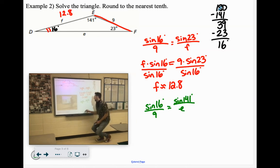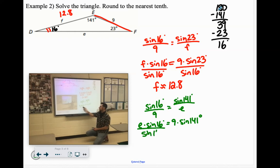I keep forgetting the letters here. So if we cross multiply, we have E times sine of 16 equals 9 times sine of 141 divided by sine of 16 degrees.